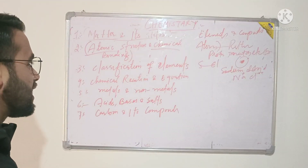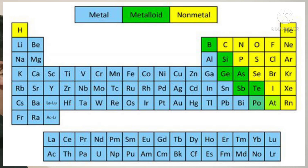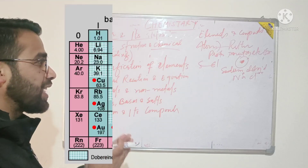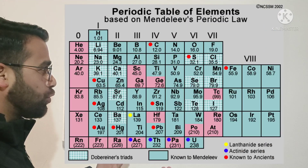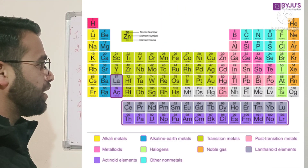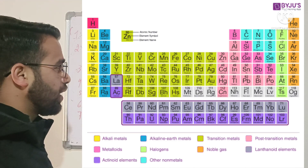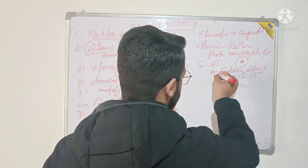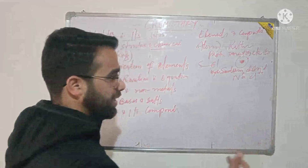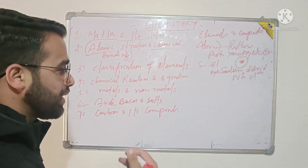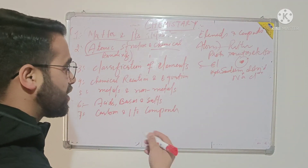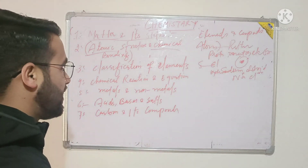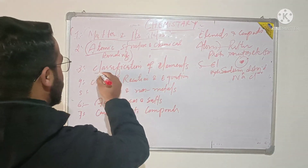Then we will study about the classification of atoms and elements. You will study the periodic table, including elements such as hydrogen, helium, lithium, beryllium, boron, and carbon. You will also study about the atomic number of these elements.